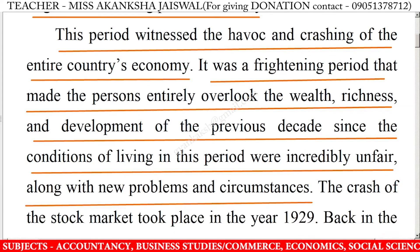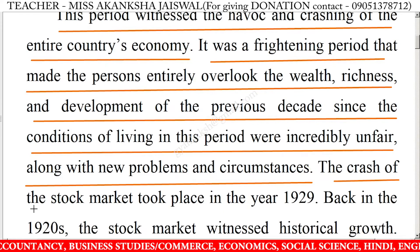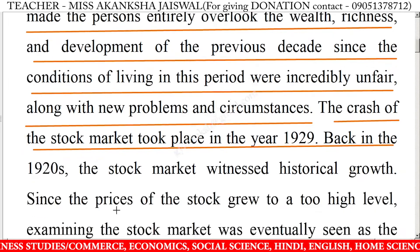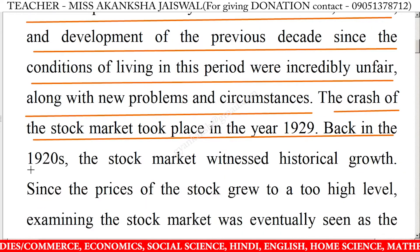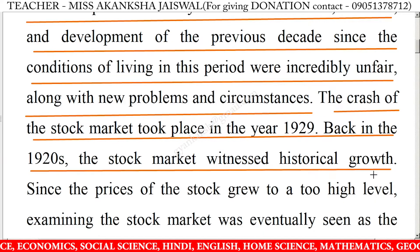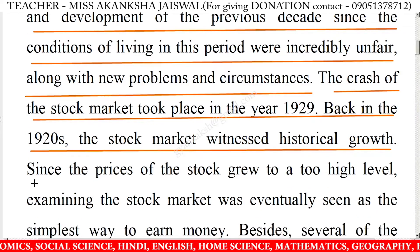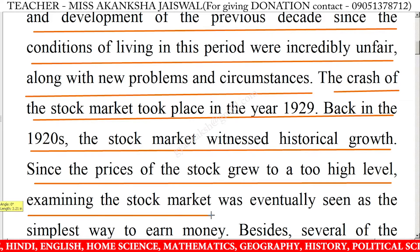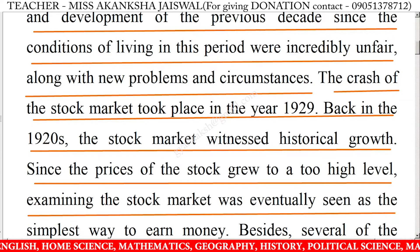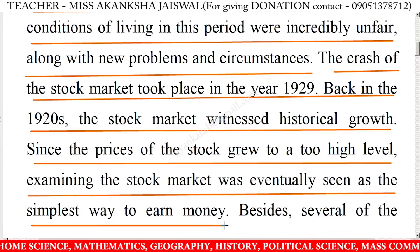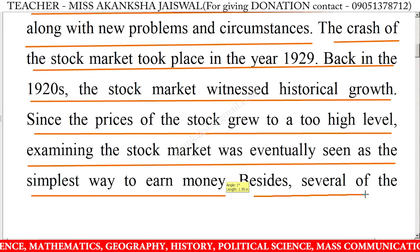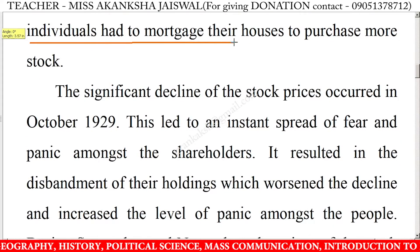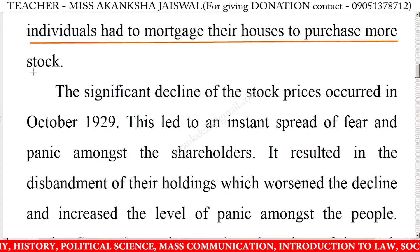Since the conditions of living in this period were incredibly unfair, along with new problems and circumstances, the crash of the stock market took place in the year 1929. Back in the 1920s, the stock market witnessed historical growth, and since the prices of the stock grew to a too-high level, investing in the stock market was eventually seen as the simplest way to earn money. Besides this, several individuals had to mortgage their houses to purchase more stock.